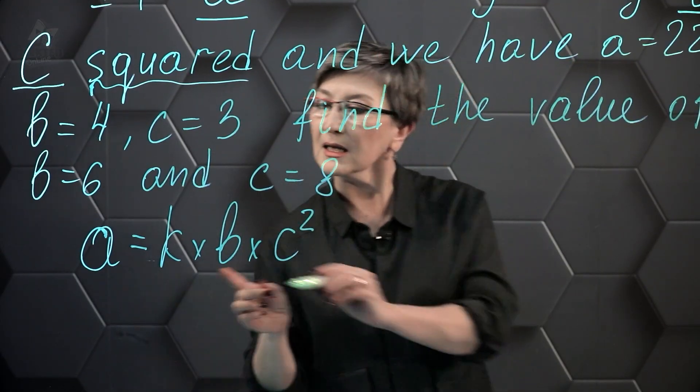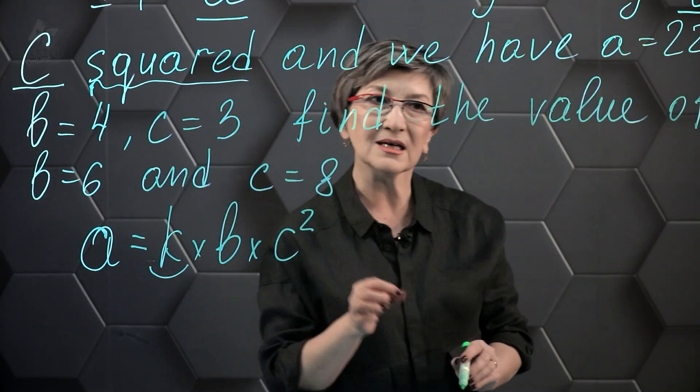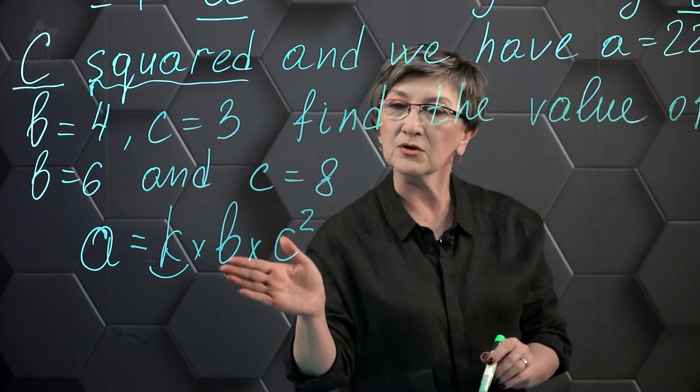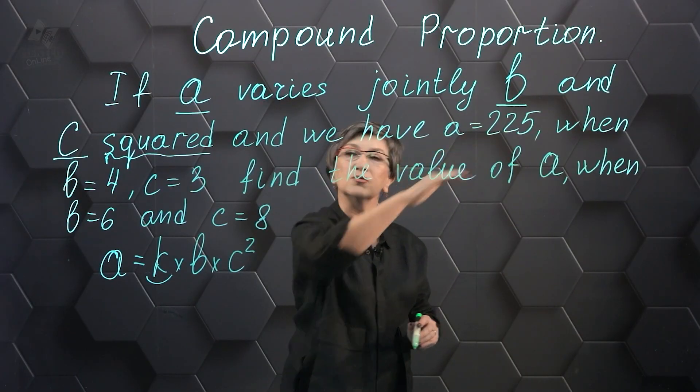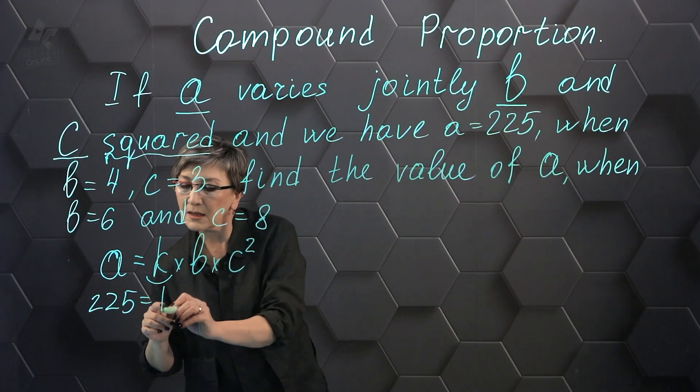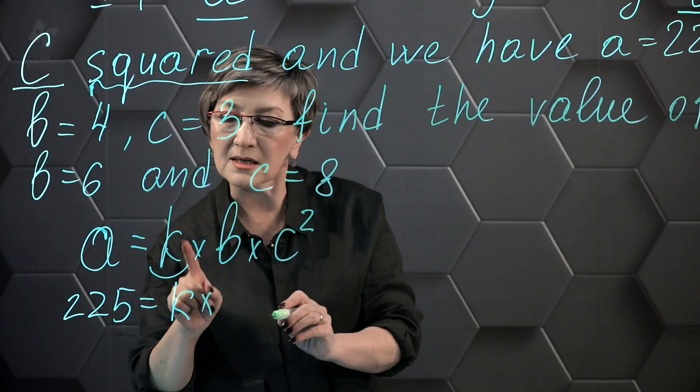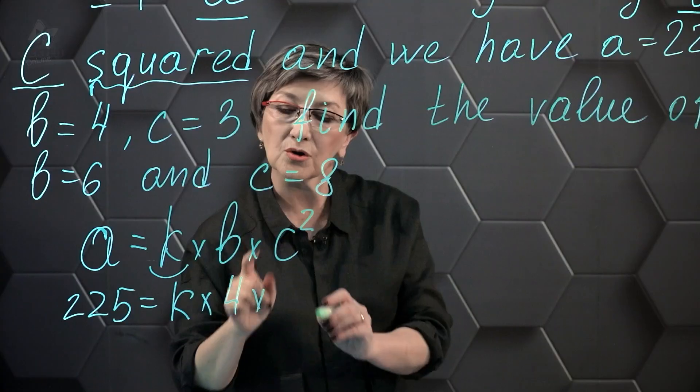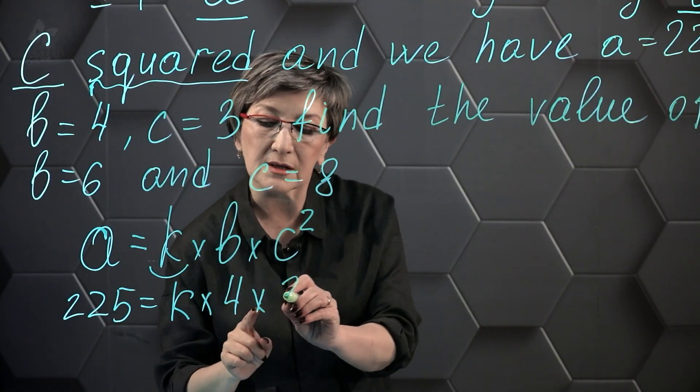The quantities are proportional and we need to find the coefficient of proportionality. Substitute into this formula: a equals 225, b equals 4, and c equals 3. But the formula says c squared.